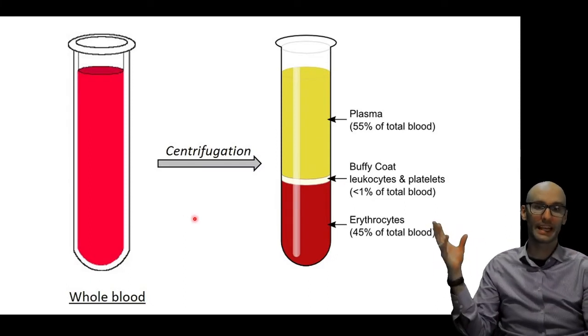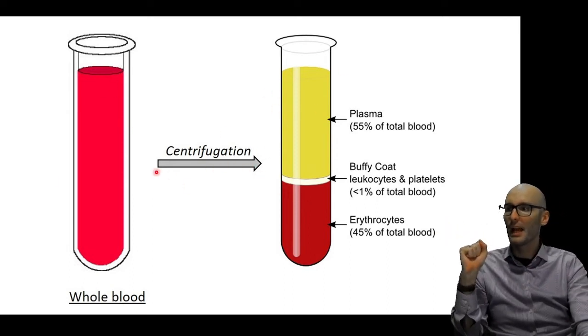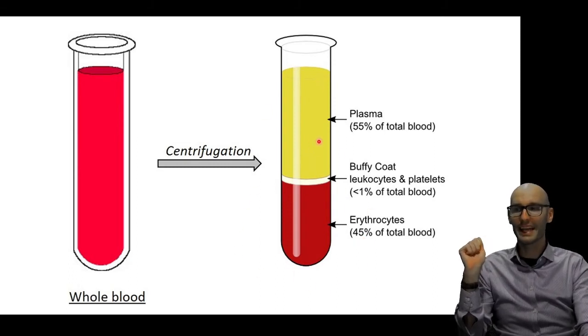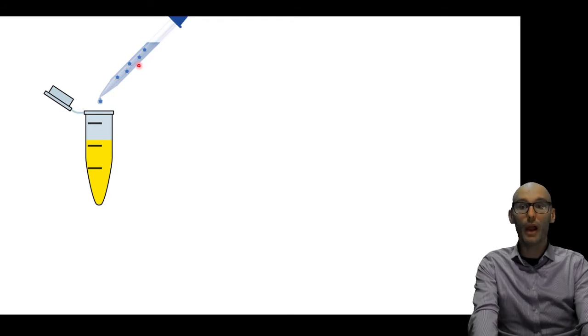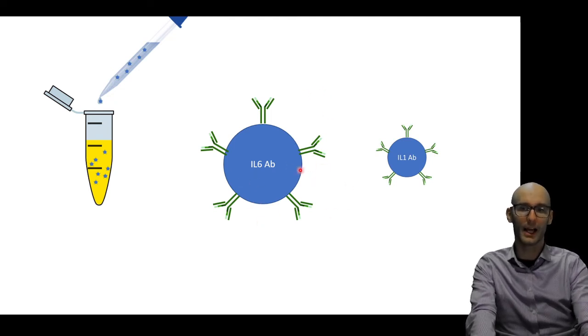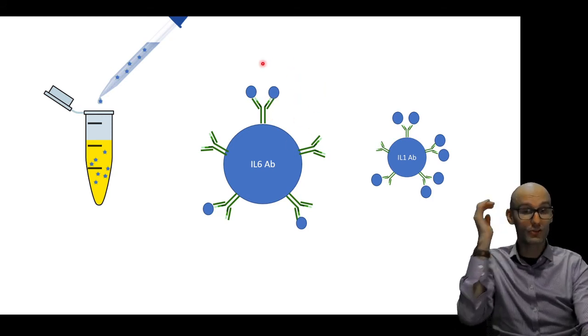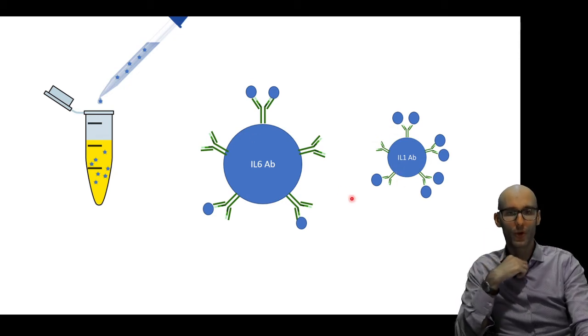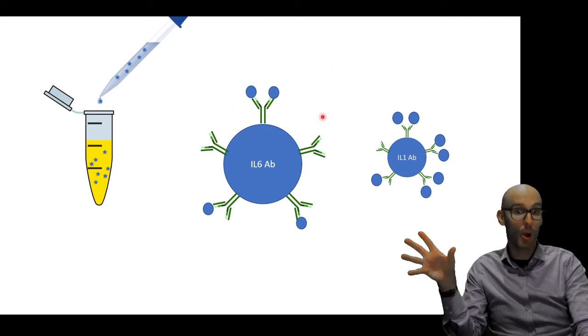So this is going to bind any IL-6 molecules. Here we have a bead, it's much smaller and it's coated in antibodies that will bind to IL-1, which is a very, very inflammatory cytokine. So we've got a large one here with anti-IL-6 antibodies and a small one here with anti-IL-1 antibodies. So let's say we wanted to see how much IL-6 and IL-1 was in someone's plasma who had SARS-CoV-2, for example. We would take their blood, we would centrifuge it, so all the cells fall to the bottom, and then we would take their plasma to see how much inflammatory cytokines are floating around that plasma. We would add those beads to the plasma. So now there are beads with the antibodies attached to them floating around that patient's plasma.